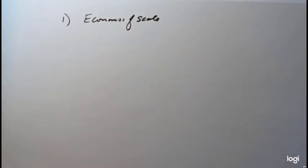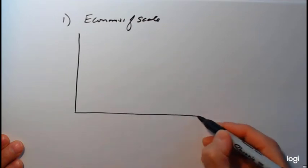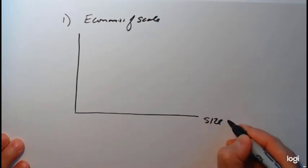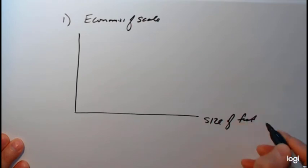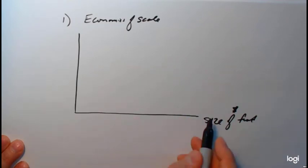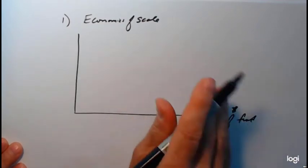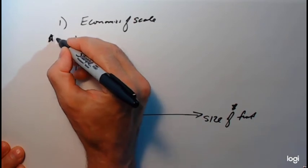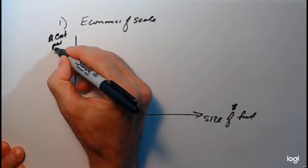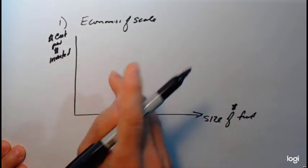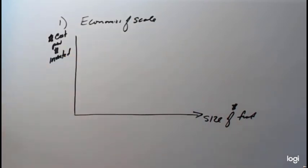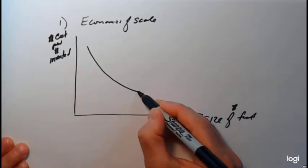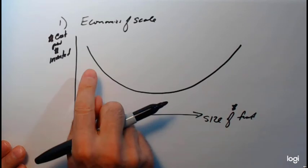Economies of scale: as your fund size gets bigger, your costs come down — just like in economics when plant size grows. On the x-axis we have the size of the fund in dollar amount, and on the y-axis we have the cost per dollar invested. The graph shows a declining cost curve as the fund gets larger, similar to what you'd see in a microeconomics textbook.